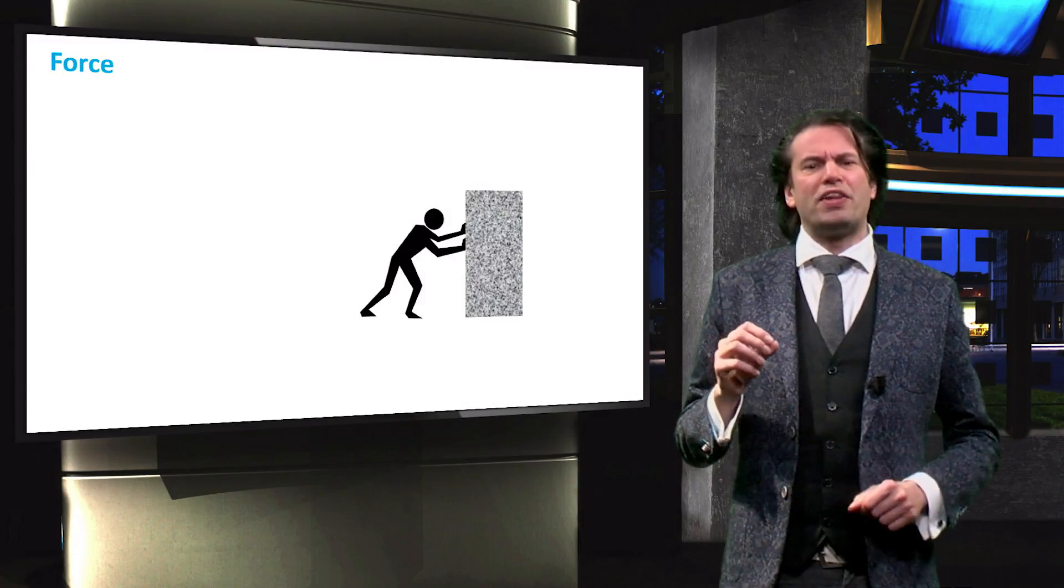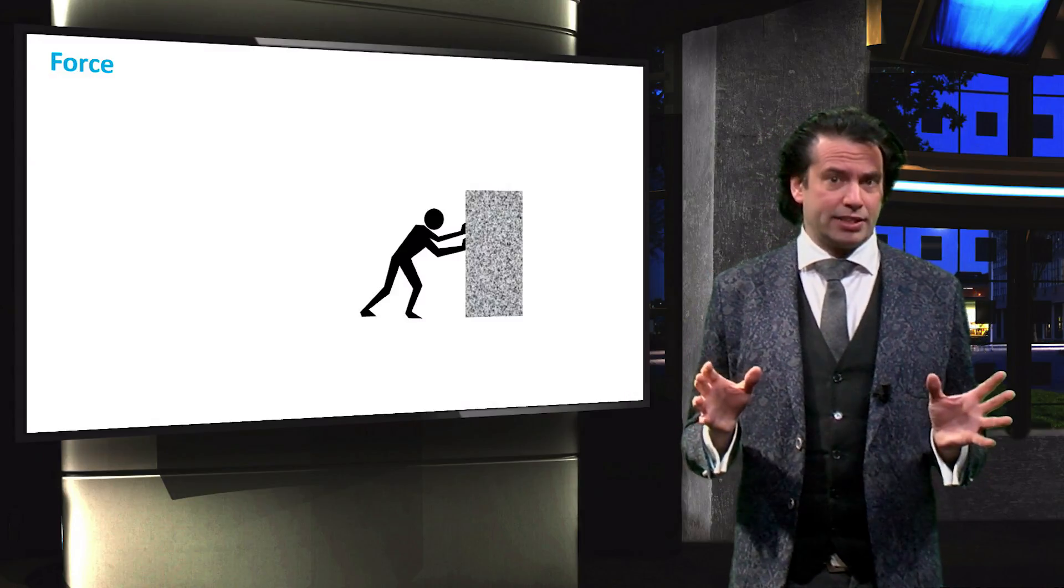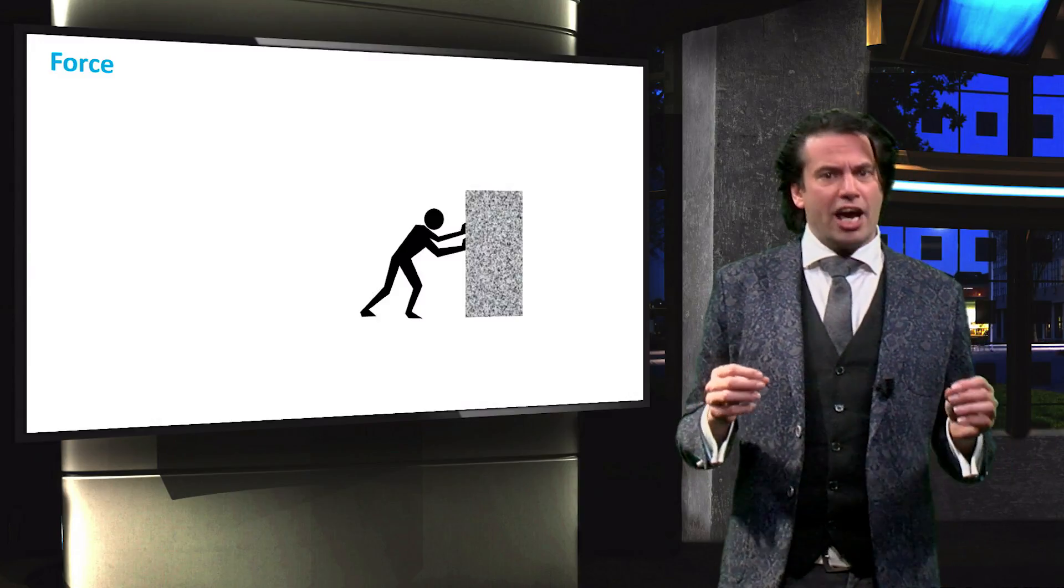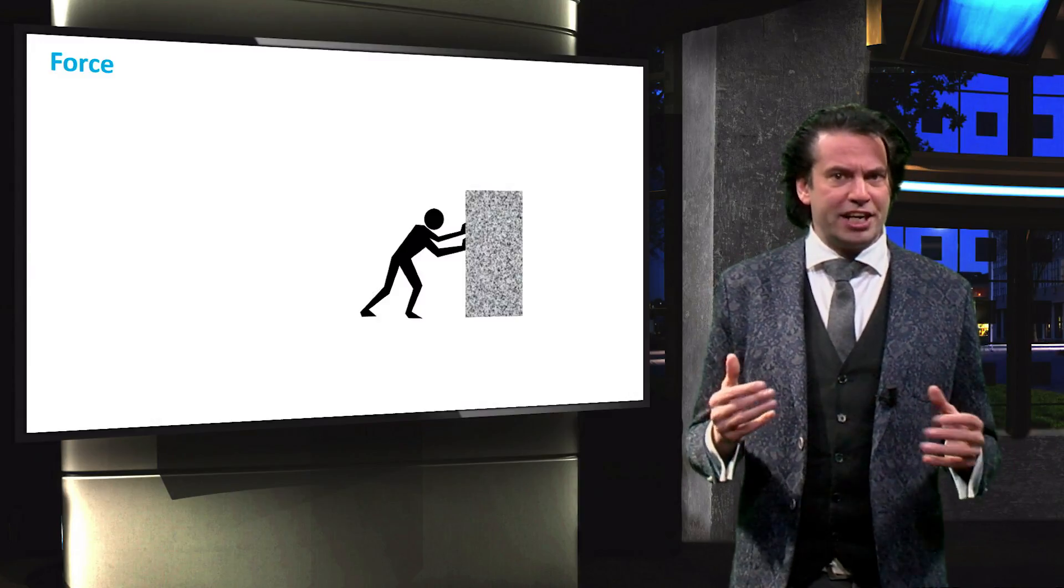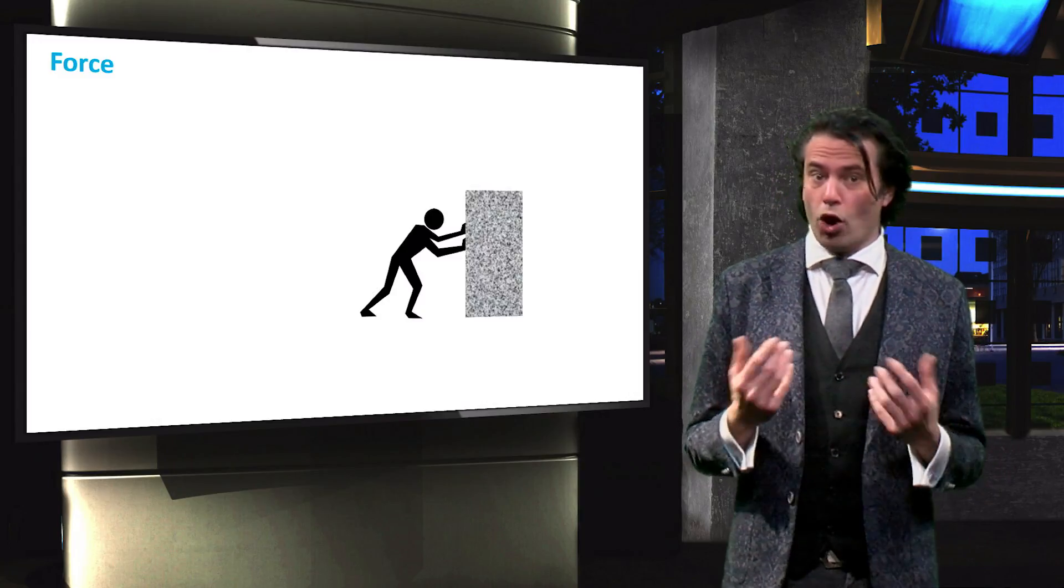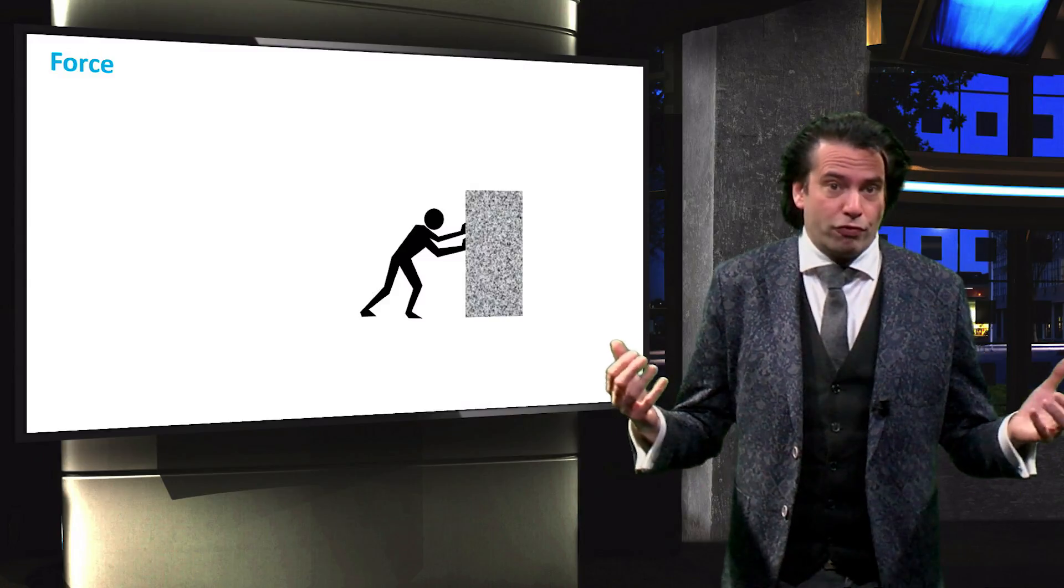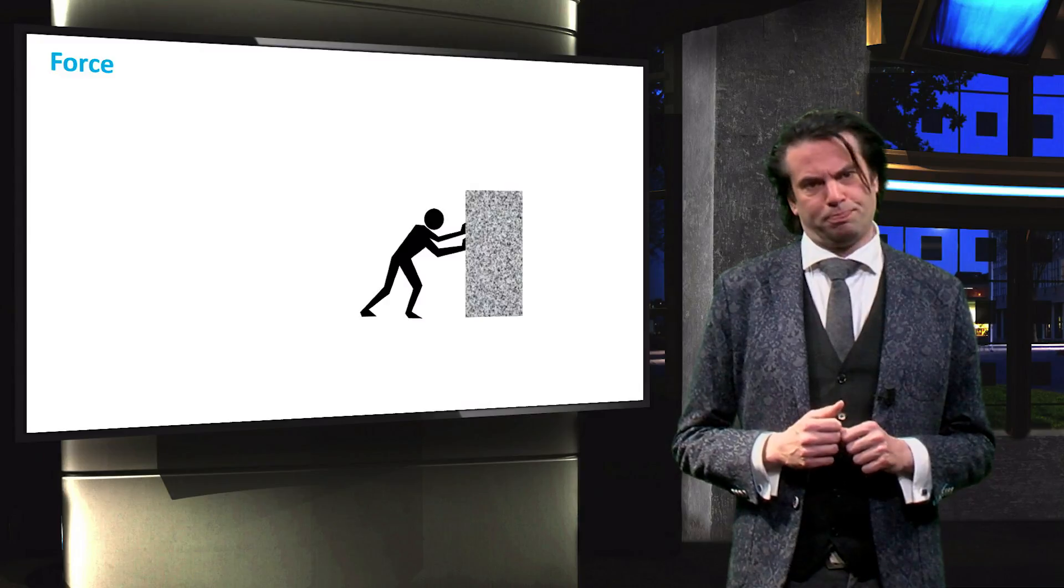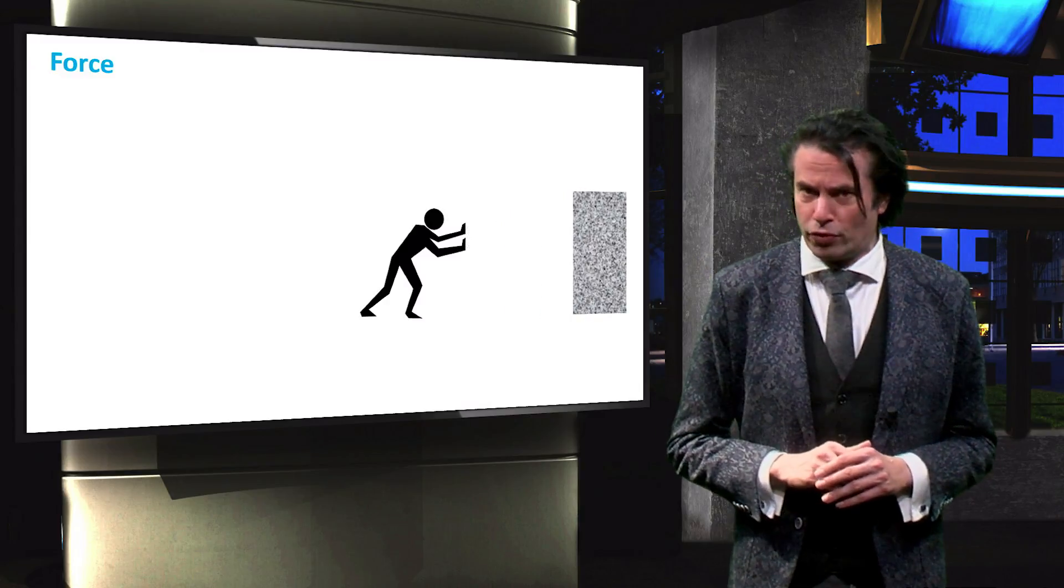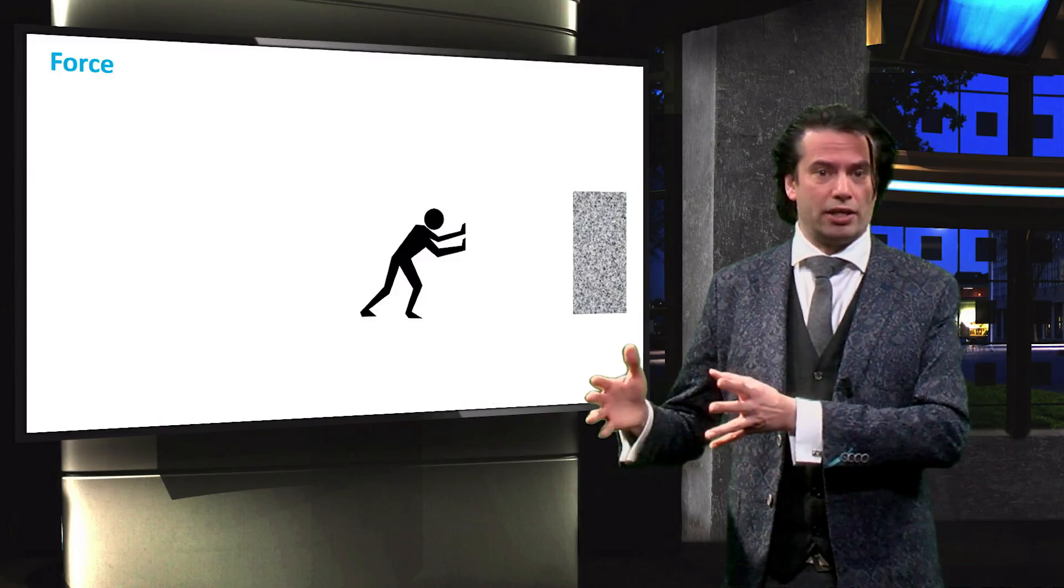We will start with the force. The force can be defined as any influence on an object that changes its motion. A force is exerted as a result of an interaction between two or more objects. The objects can be in physical contact or at a distance, like gravitational forces or magnetic forces. In this figure, a very strong man exerts a force on a granite block. The force causes the block to accelerate.